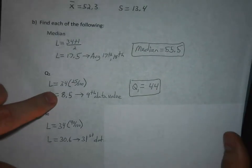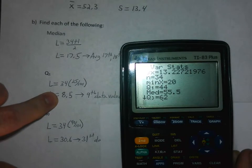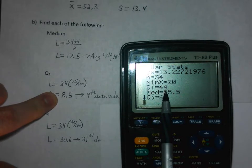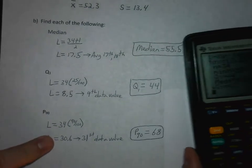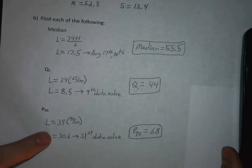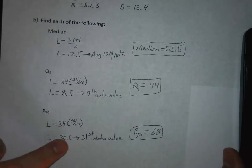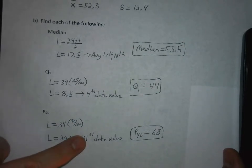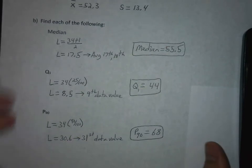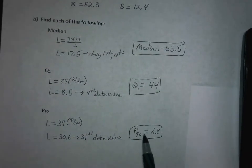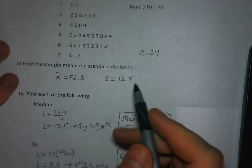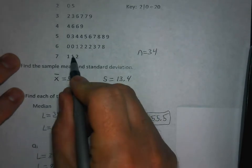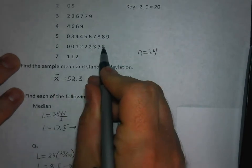And then P90 - again very similar, take n times your percentile. The 90th percentile gives you 30.6, so you have to count into the 31st data value and that'll give you 68. So P90 is 68. One way to find the 31st data value is if you know there's 34 total, you have 34, 33, 32, 31, so 68 will be P90.